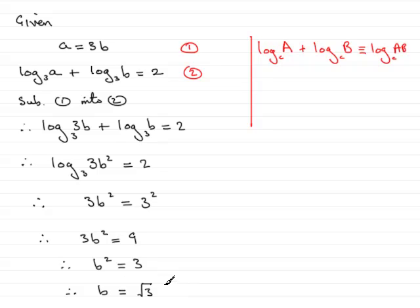So now that we've got b is root 3, it's a simple case of just finding a. So all I need to do is substitute b equals root 3 into equation 1. So if we say that we're going to sub b equals root 3 into equation 1, we find that we get a equals 3 times b, so that would be 3√3.